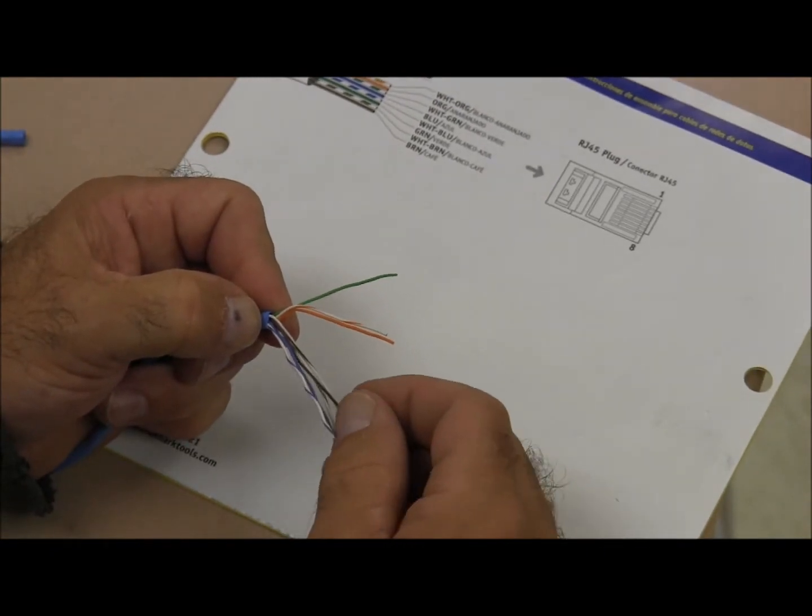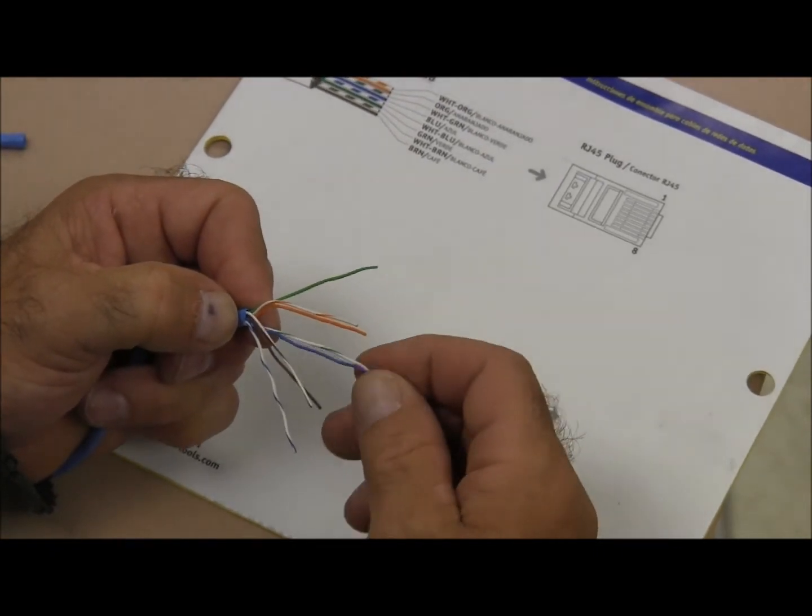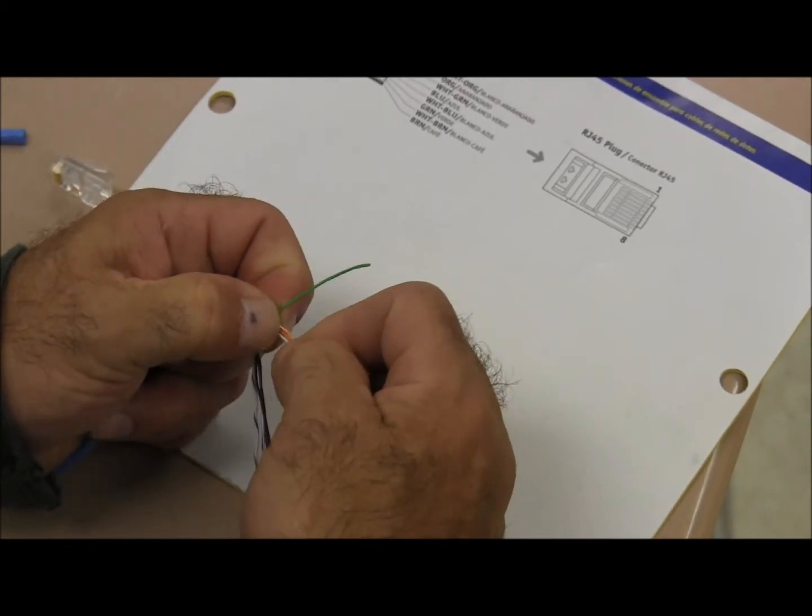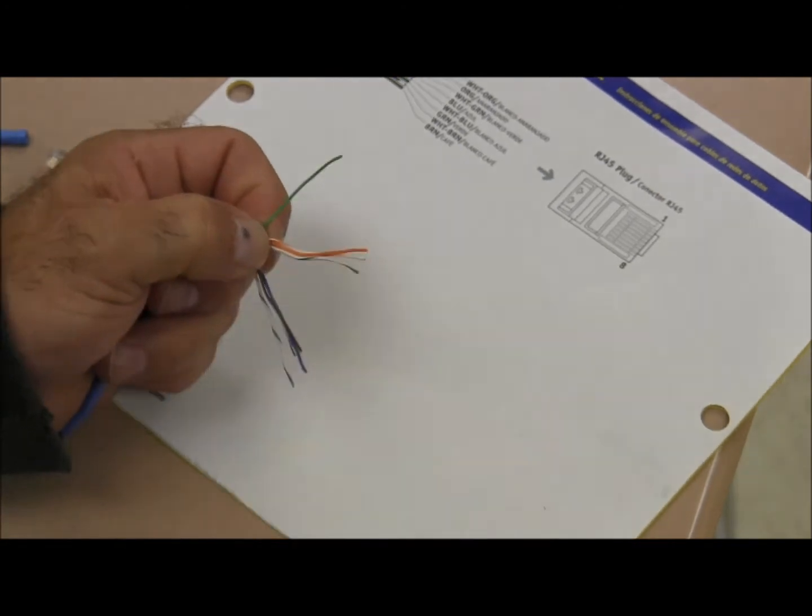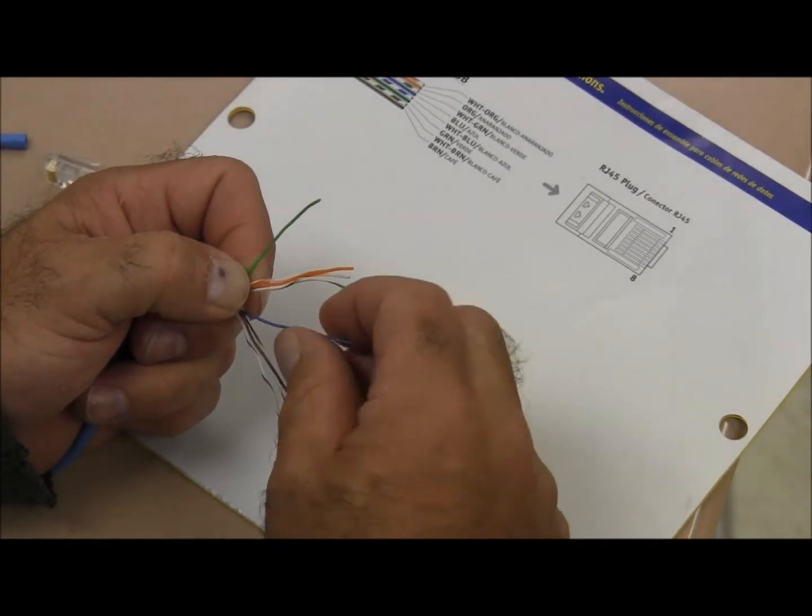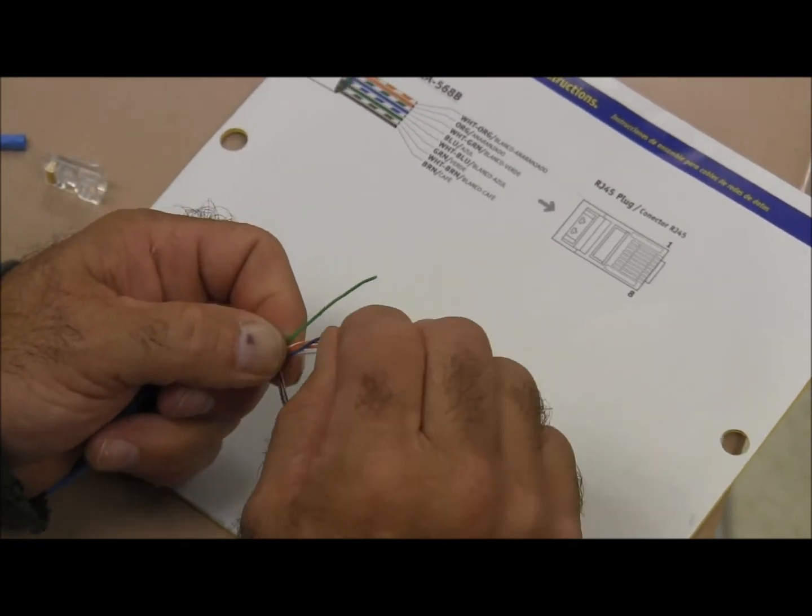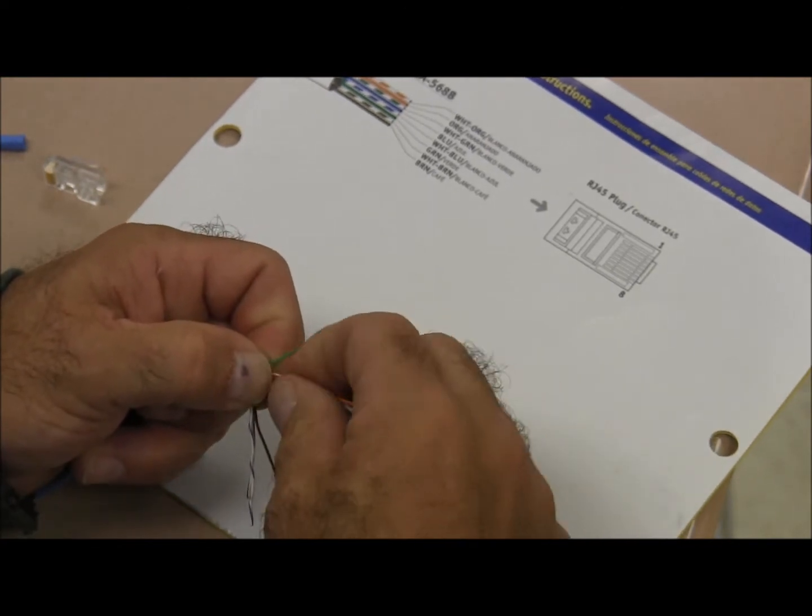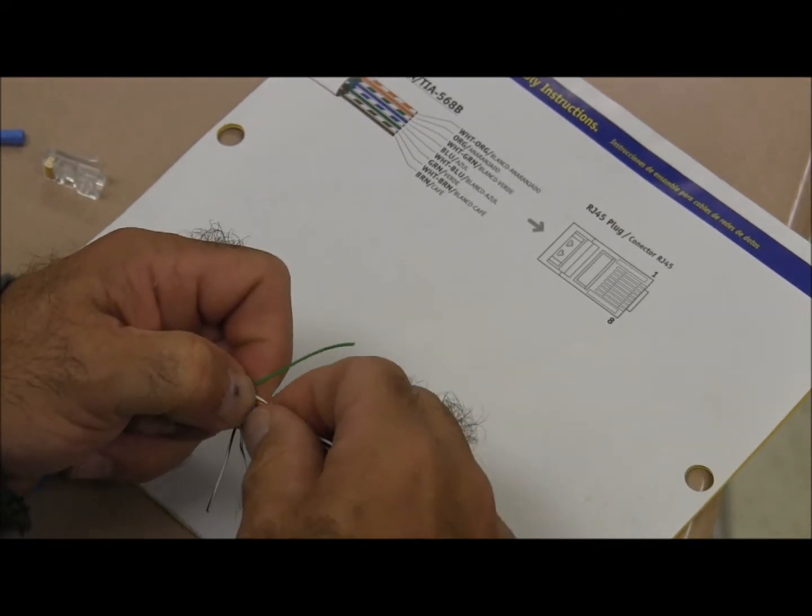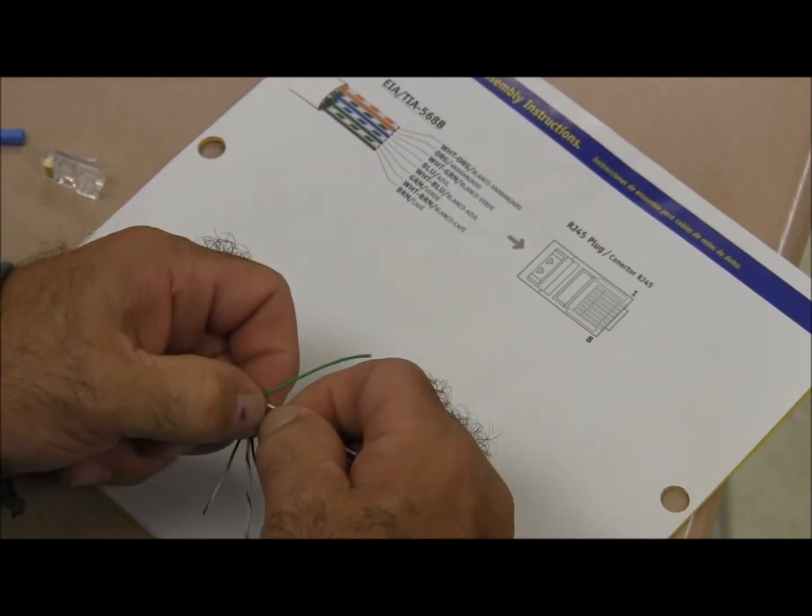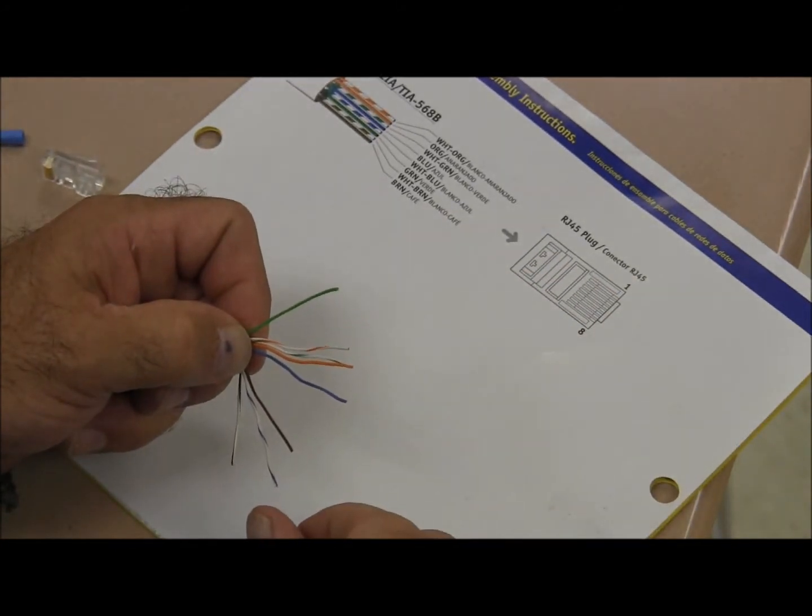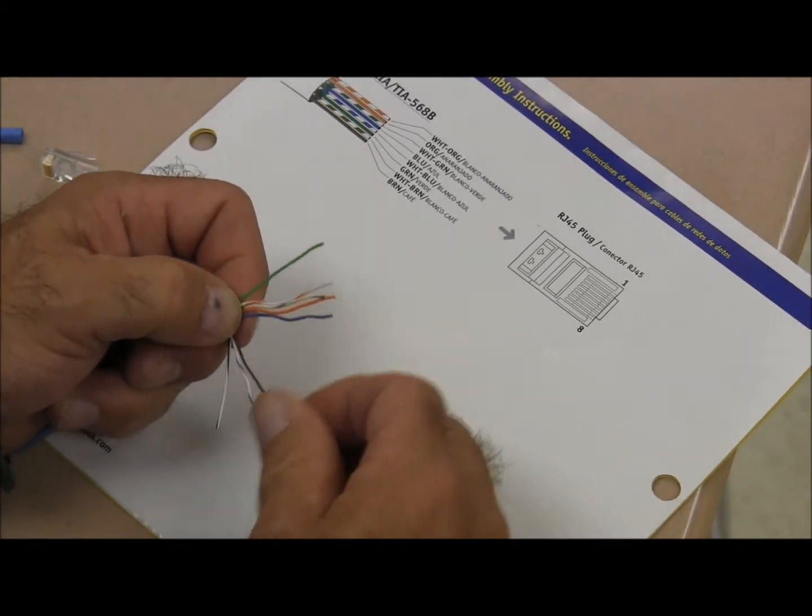The next wire that will be used is the green stranded wire. I will be placing this next to the orange and I am trying to keep it in line using both hands as we are going through. The current wire that will be coming next is the blue. I am holding it and trying to keep it as tight as possible to the base of the wire, the RJ45.